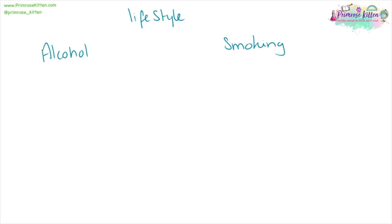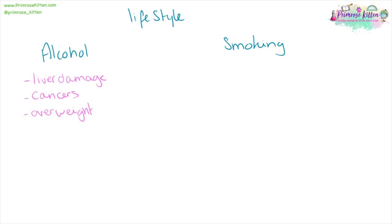As part of a lifestyle, some people may choose to drink alcohol or to smoke. However, if you drink alcohol, you are susceptible to liver damage, at increased risk of some cancers, and alcohol has a lot of calories so you are at risk of being overweight. Smoking can lead to lung damage and cancer.